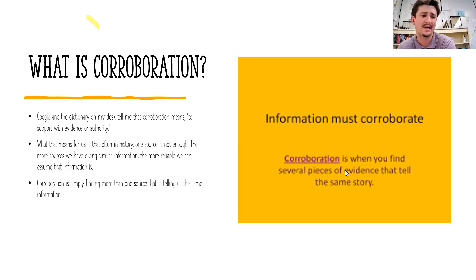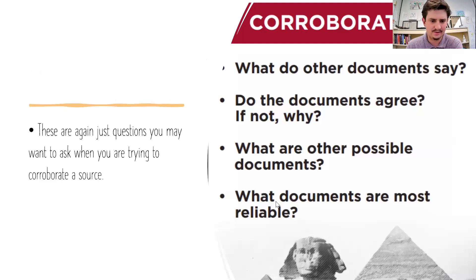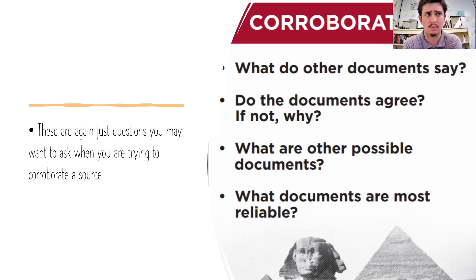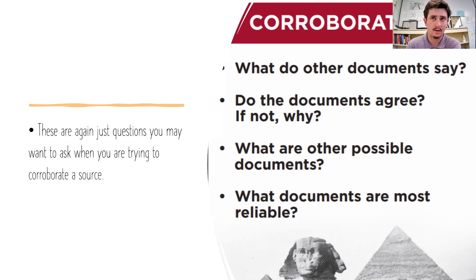You can think of corroboration as finding several pieces of evidence on the same story. If you have two sources saying the same thing, they are corroborating each other by providing the same information, and we can reliably assume that information is probably accurate. Some questions to consider when corroborating: what do other documents say? What do other sources tell you about the same thing? Do they agree? If not, what could make someone disagree? What other possible documents exist — is there video, a song, or artwork about this event? The variety of sources you can find, the better. And which documents are the most reliable — is one person more credible than another?